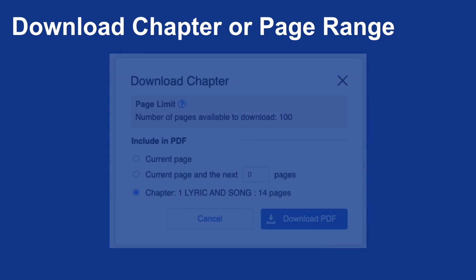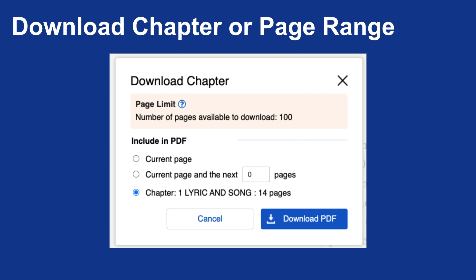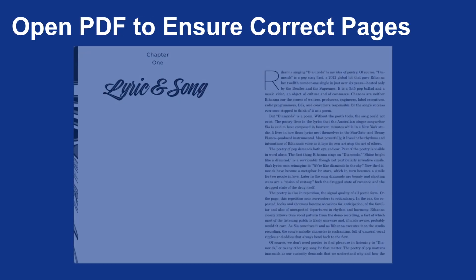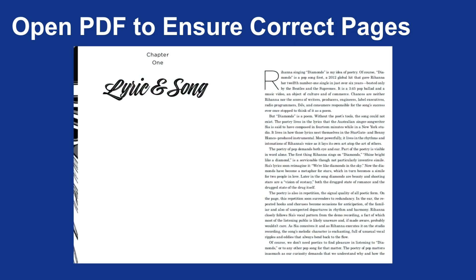Next, you'll get a pop-up window that will ask you how many pages to download, or if you want a specific range of pages. In this example, I'm only choosing chapter one. I will click Download PDF. I am going to open it on my own computer to make sure that every page I intended to download is visible within that PDF, and then we're going to upload it into D2L.